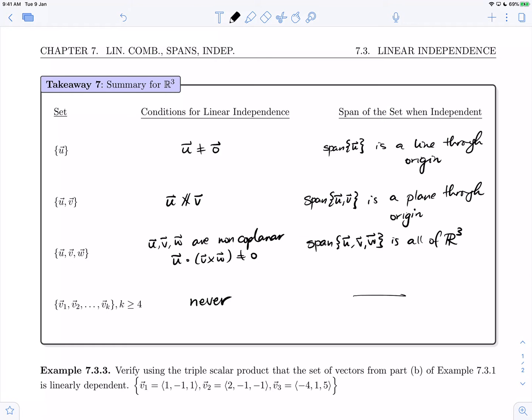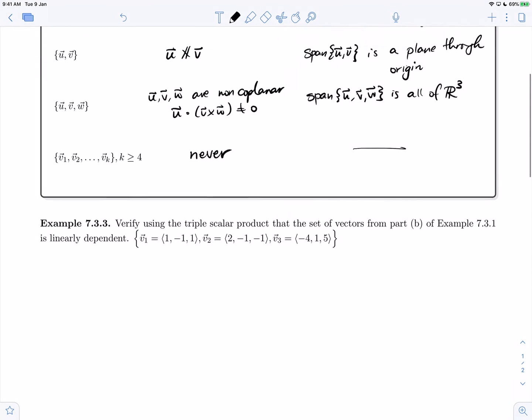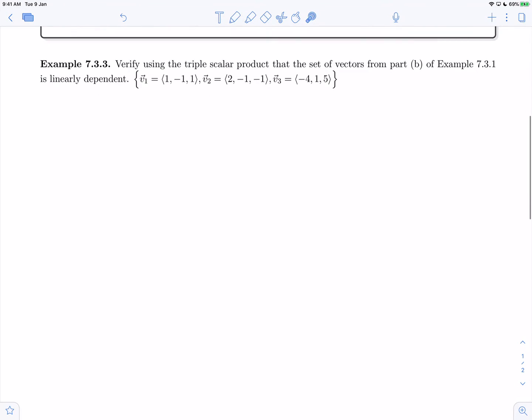Let's go then and look at example 7.3.3. Here we are asked to verify using the triple scalar product that the set of vectors from example 7.3.1 is linearly dependent.